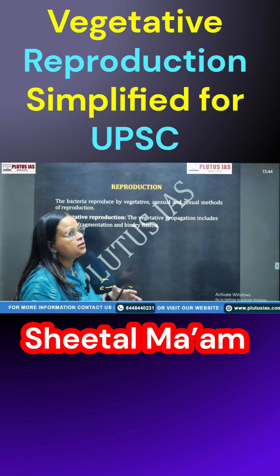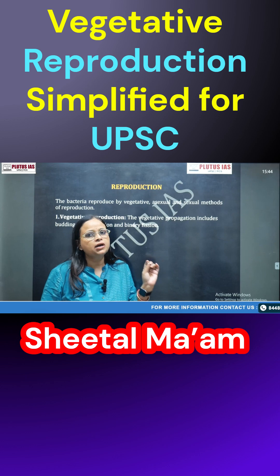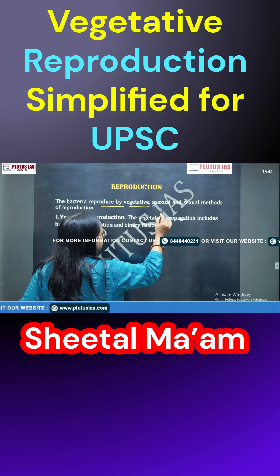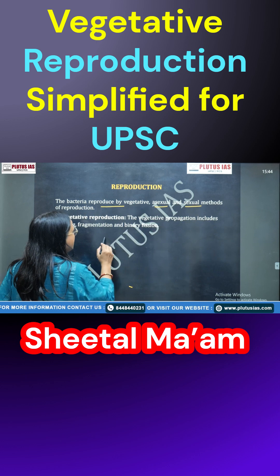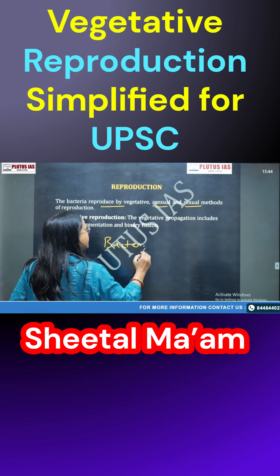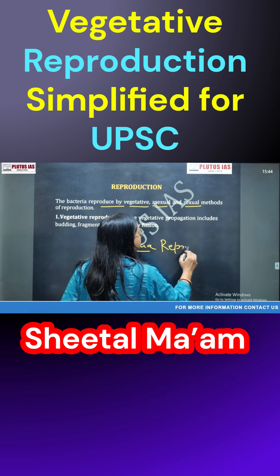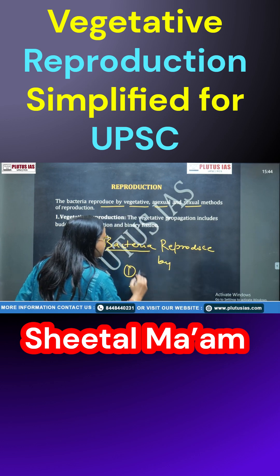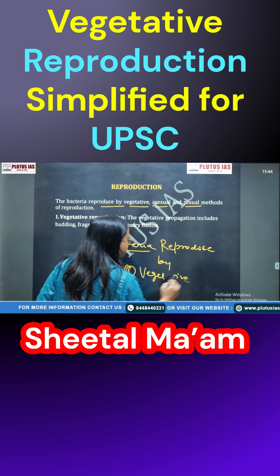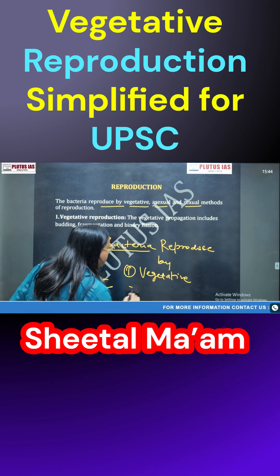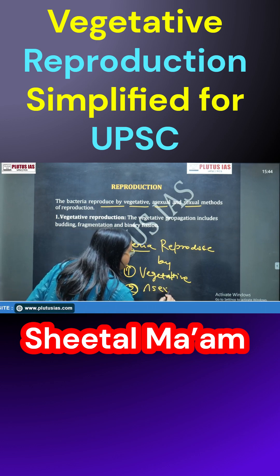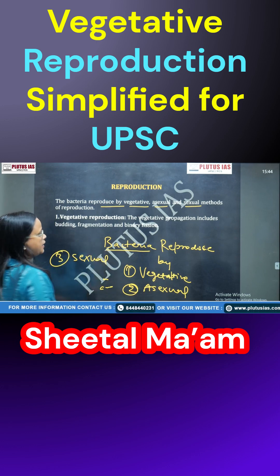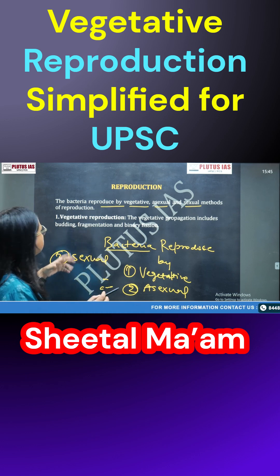Bacteria reproduces in a lot of ways, but today's video we are going to discuss only the vegetative reproduction. Bacteria reproduces by vegetative, asexual, and sexual methods. Today we are going to discuss only the vegetative, asexual, and sexual method of reproduction.